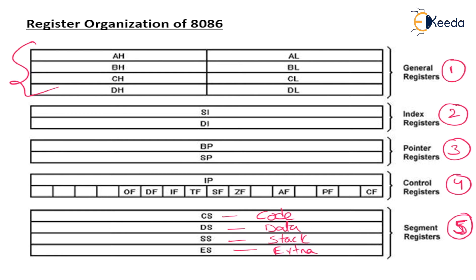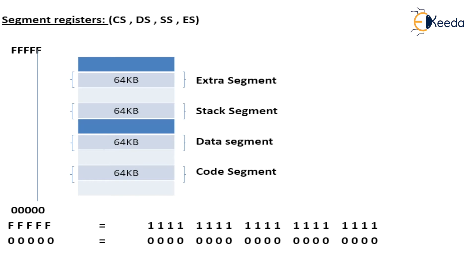In those address locations we have data. Suppose on our laptop, if the hard disk is 1 TB, how do we divide it? We divide it into drives: C drive for programs, D drive for semester data, E drive for entertainment, and F drive for extra files. In the same manner, the 8086 microprocessor memory is divided into four segments.